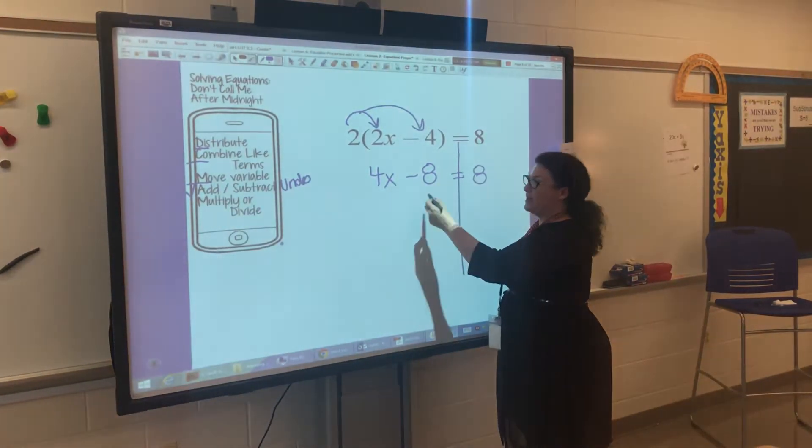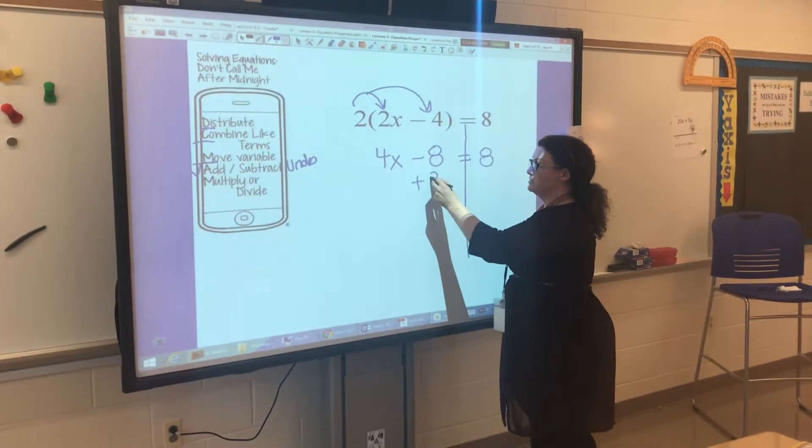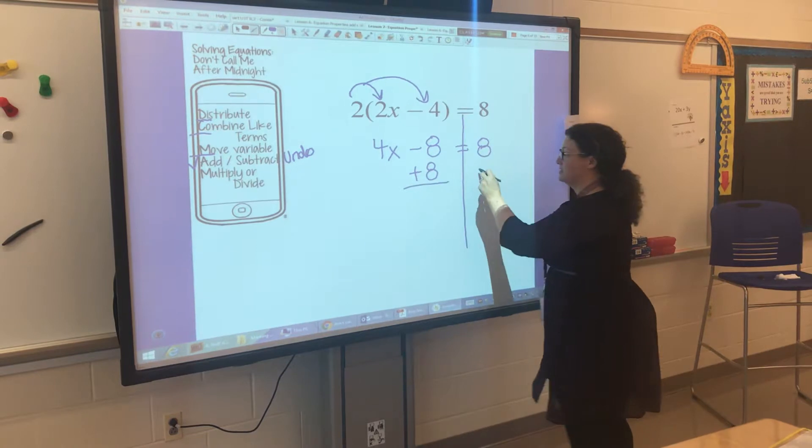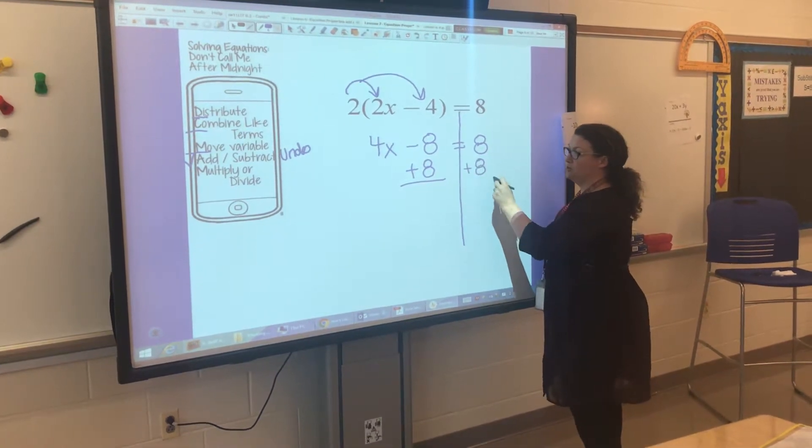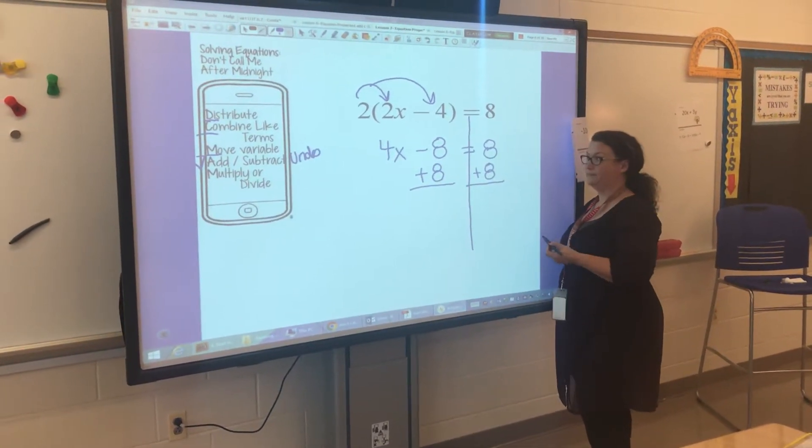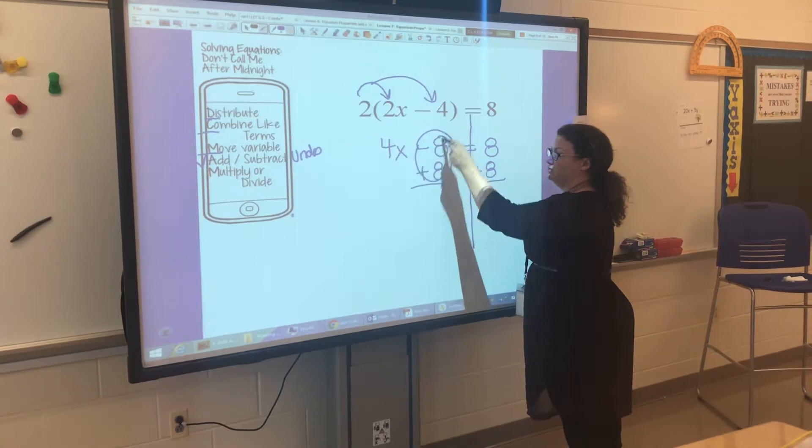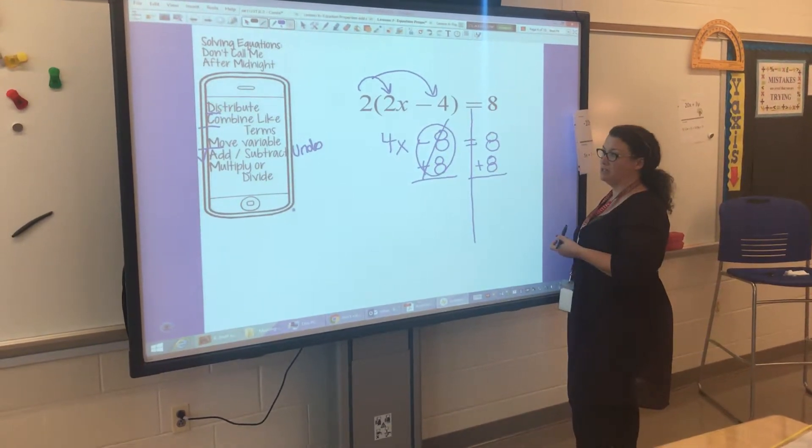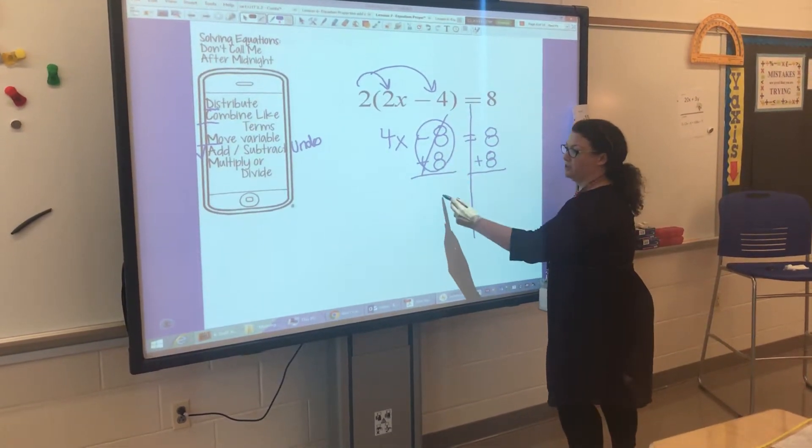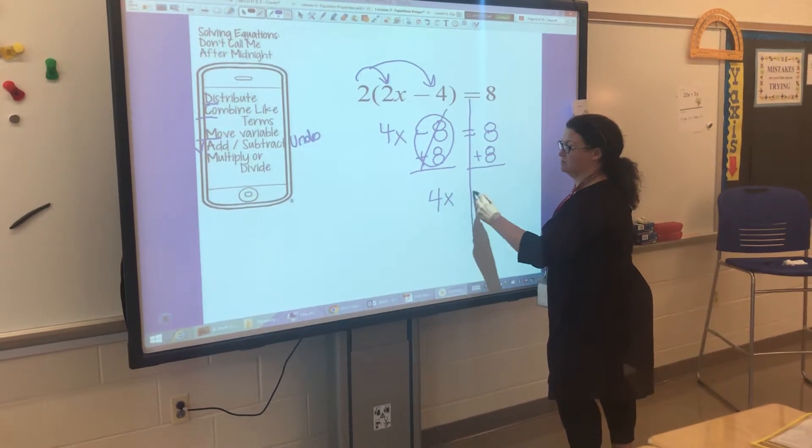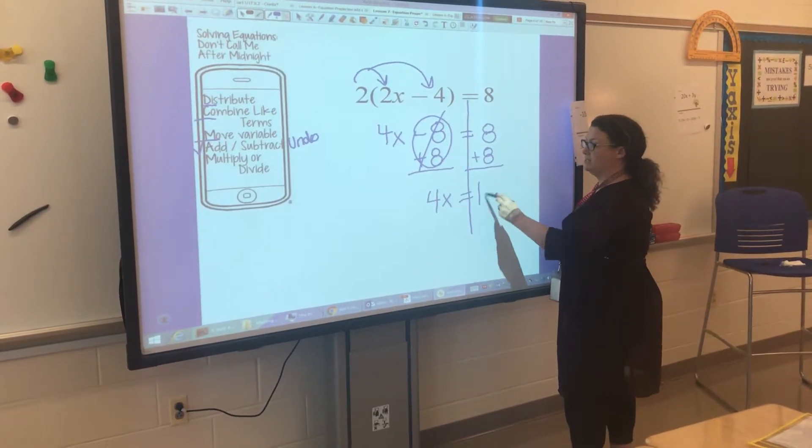So I'm going to undo that by using inverse operations and adding 8 to both sides. Whatever you do to one side, you have to do to the other side. This becomes 0, so I like to make my 0 to remind myself. What I have left over here is 4x. 8 plus 8 is 16.